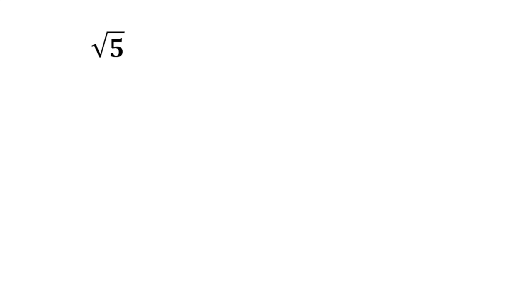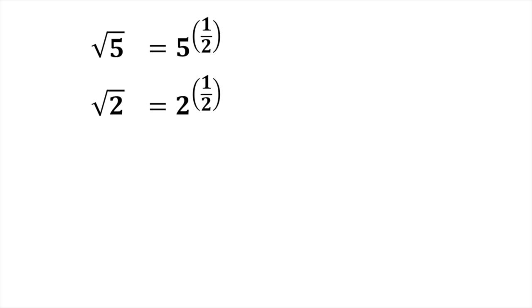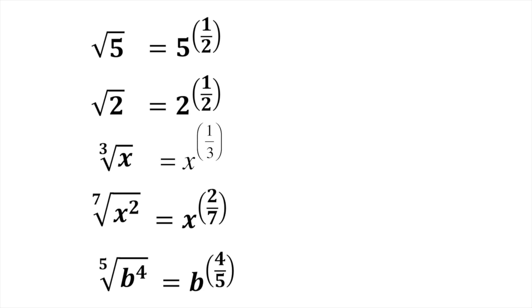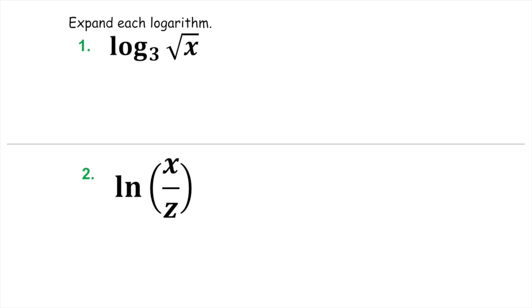Let's have you try some more — converting back and forth. The radical of five is going to be five to the one-half. Two to the one-half would be the square root of two. Cube root of x would be x to the one-third. X to the two-sevenths — the seven is the seventh root, two is the exponent on x, so this would be the seventh root of x squared. And the fifth root of b to the fourth is b to the four-fifths. Go ahead and try these two, then check your answers.